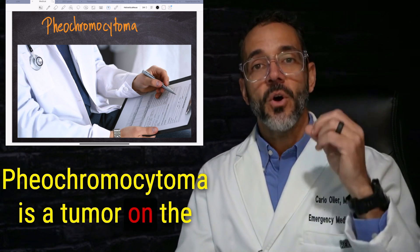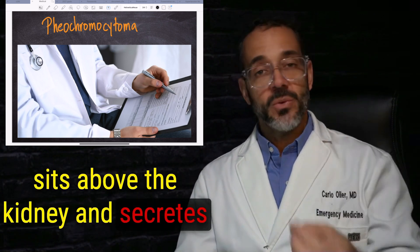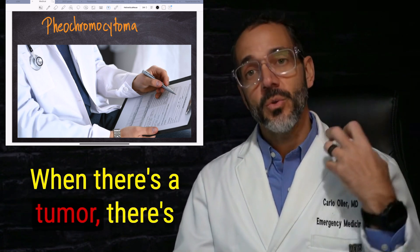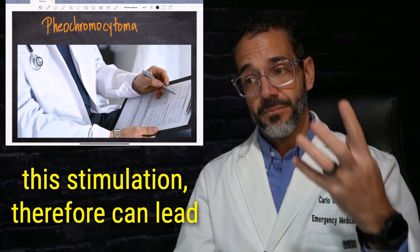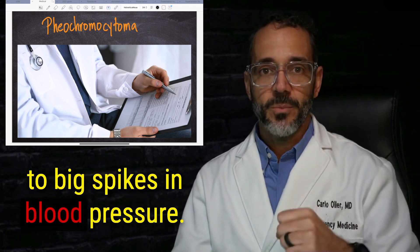Pheochromocytoma is a tumor on the adrenal gland. The adrenal gland is a gland that sits above the kidney and secretes certain molecules that can spike your blood pressure. When there's a tumor, there's a lot of this secretion, a lot of this stimulation, therefore can lead to big spikes in blood pressure.